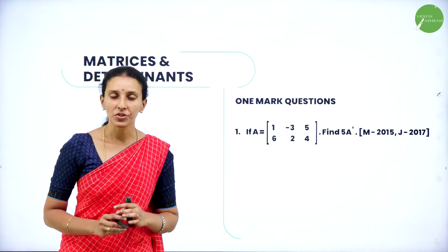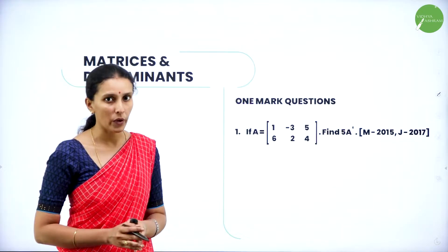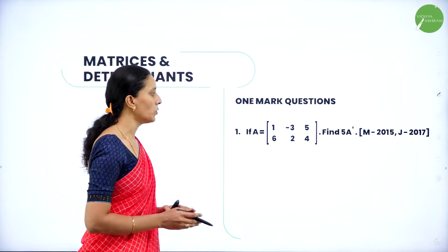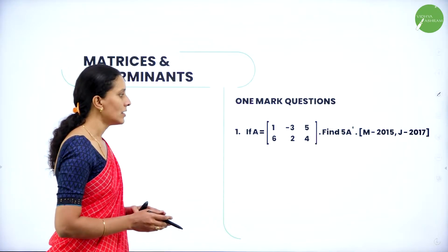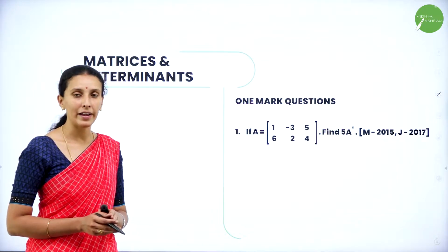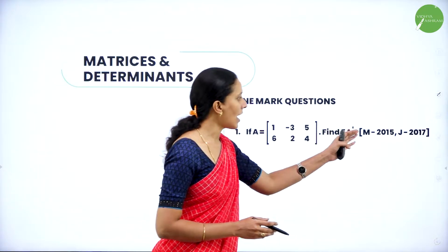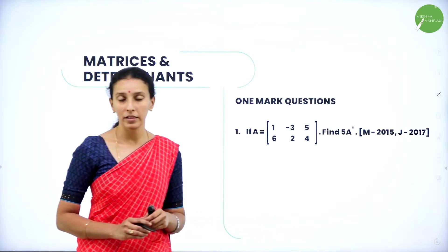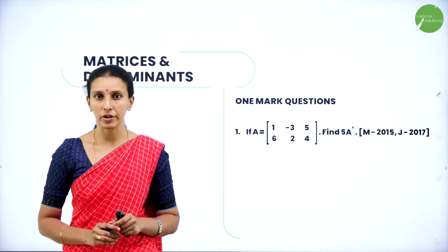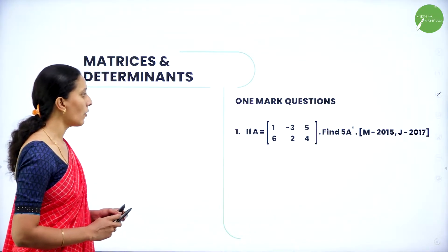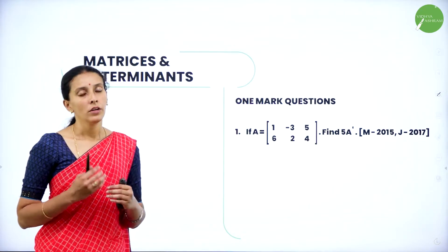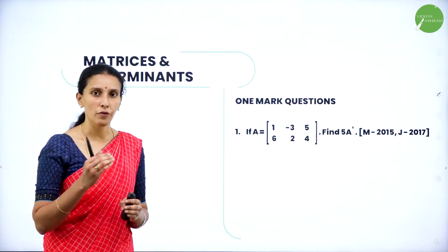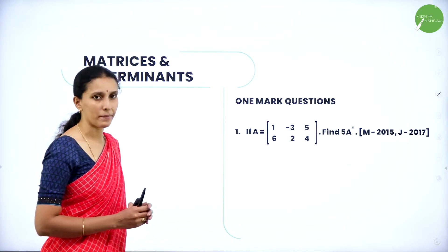All the questions I have collected are from previous year question papers. If A is equal to the matrix [1, -3, 5; 6, 2, 4], find 5A dash. This question was asked in March 2015 and July 2017 (supplementary paper). Transpose of a matrix questions will arise for one-mark, and this is an example of that.